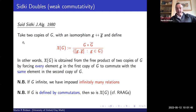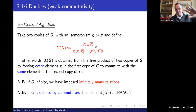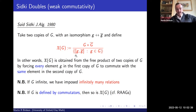The original paper by Sidki is from 1980 and it's a wonderfully simple idea — something between the free product and direct product of a group. You take two copies of some group G, written G and G-bar (the bar just distinguishes the second copy), and then you tell each element of G to commute with the same element in the other copy.